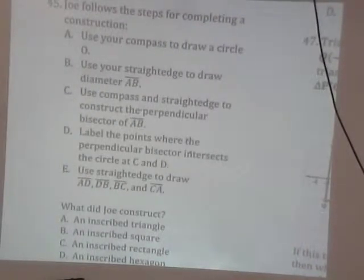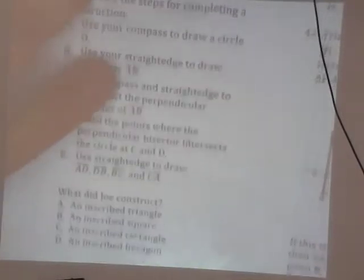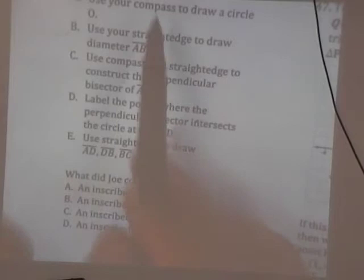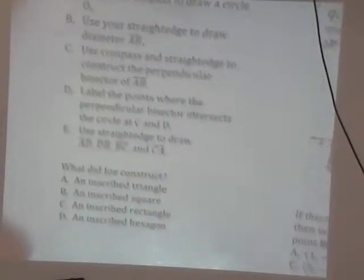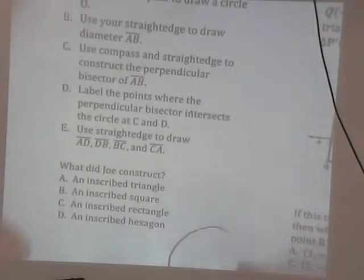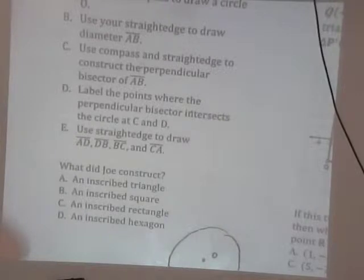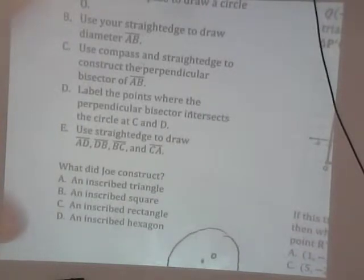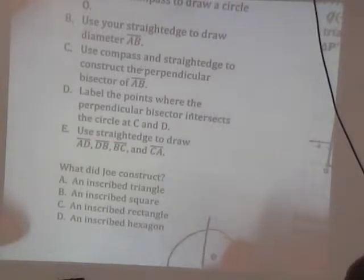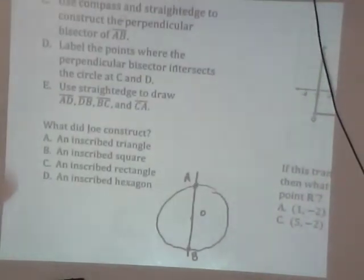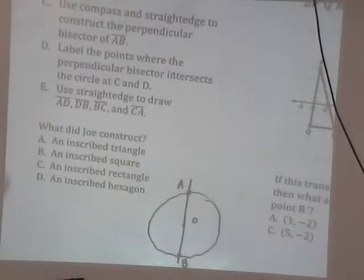It's different on his paper. You'll have this one, right? Okay. Alright. Joe used the steps for completing a construction. Use a compass to draw a circle. Oh, so let's draw this. Basically, what did Joe construct? We're going to try to follow these steps and then see which one he constructs. Does that make sense? Okay. So he first draws a circle. Use a straight edge. He uses a straight edge to draw diameter AB. And then what's the next thing?